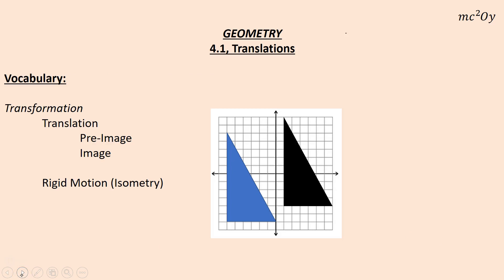Some other vocabulary: a transformation. You're going to study four different types of transformations this chapter. The first transformation we cover is called a translation — the slang term for it is a slide. It means you're actually sliding the figure. You take a pre-image, which is your beginning object, and slide it to its image.